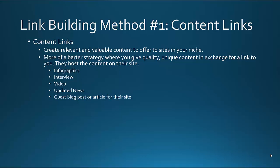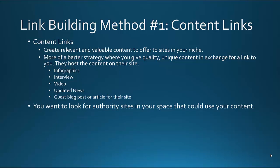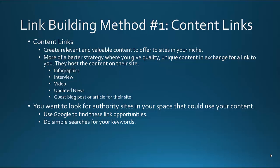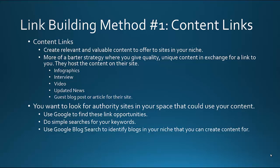The other idea is you create the content first and then shop it around to the first taker. Whether it's an article, it needs to be of the utmost quality — maybe 500 to 1,000 words or more, super high quality. You want to look for the authority sites in your space that could use your content. Use Google to find these link opportunities. You could do Google searches for your keyword phrase — things like golf magazine, golf blog, golf information, golf tips — and look for what main websites come up. Do a Google blog search to identify blogs in your niche that you can create content for.